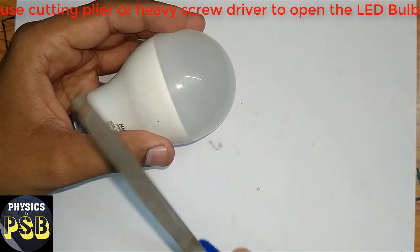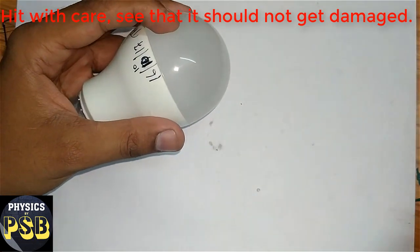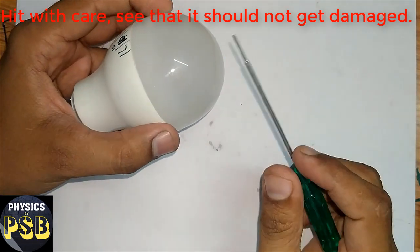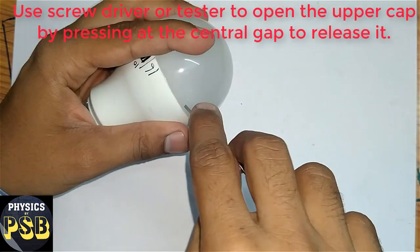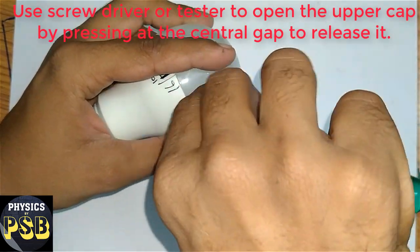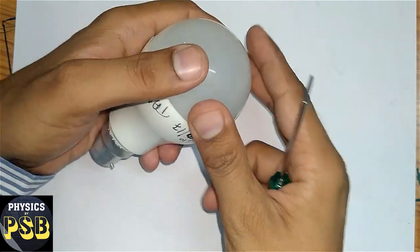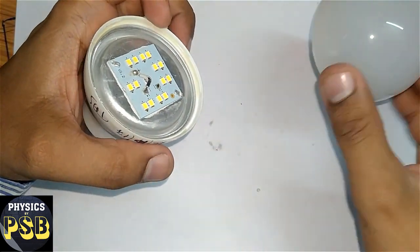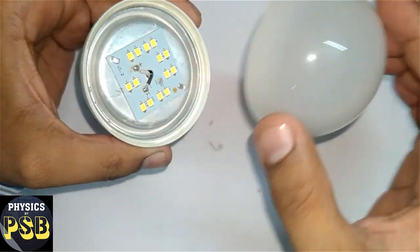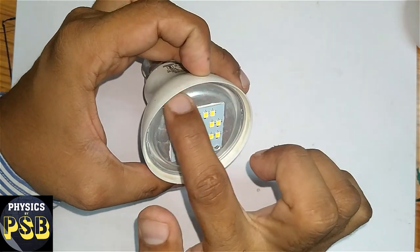Hit it gently. Then with the help of a screwdriver or tester, insert this way. Then you can see it comes off very easily. The cap has come out; keep it aside.